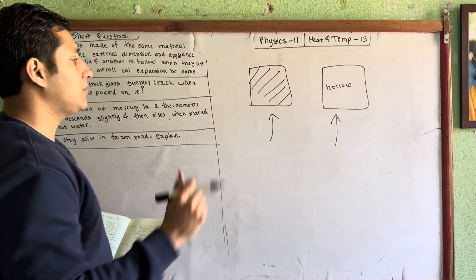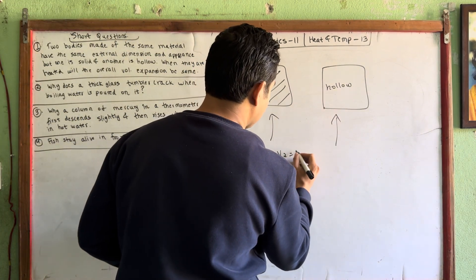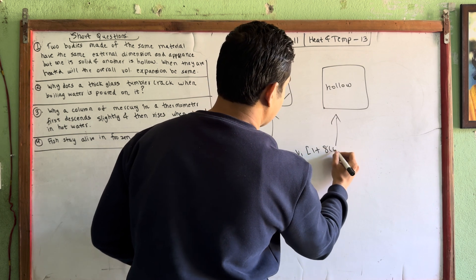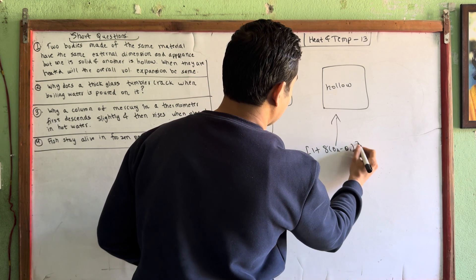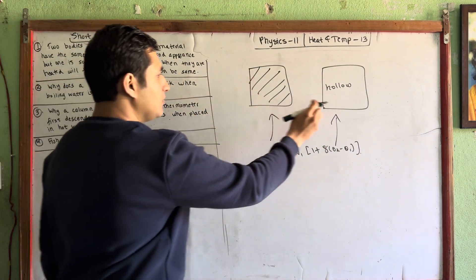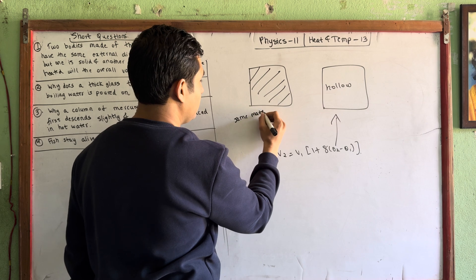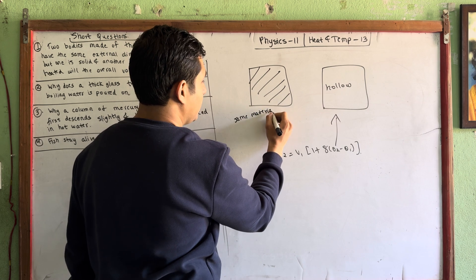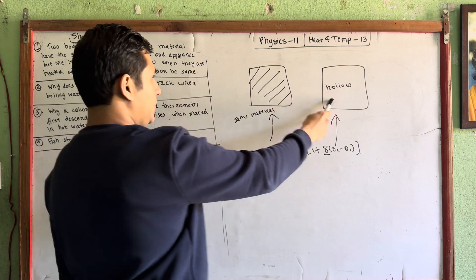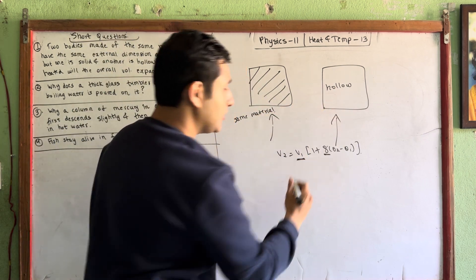The formula is: v2 is equal to v1 times (1 plus gamma times (theta 2 minus theta 1)). This is the same — the same material means the same gamma, and the original volume is the same.